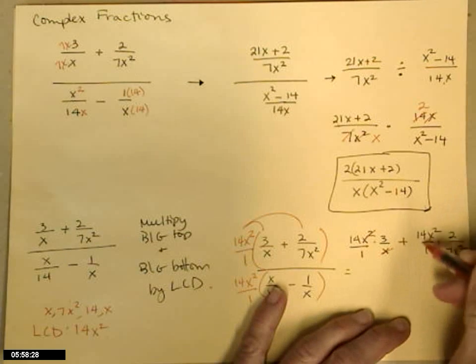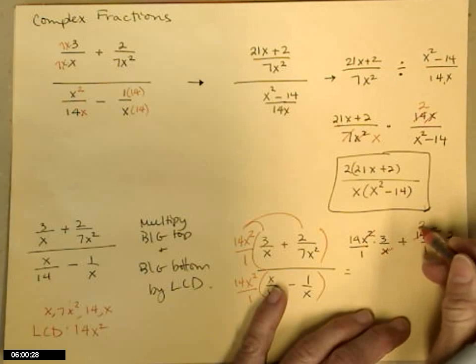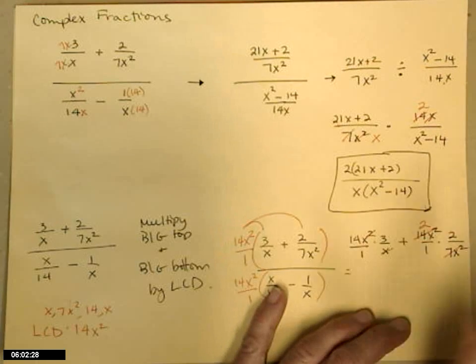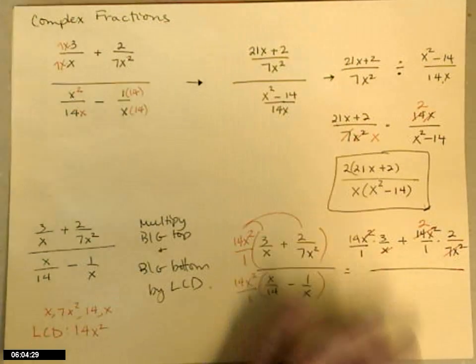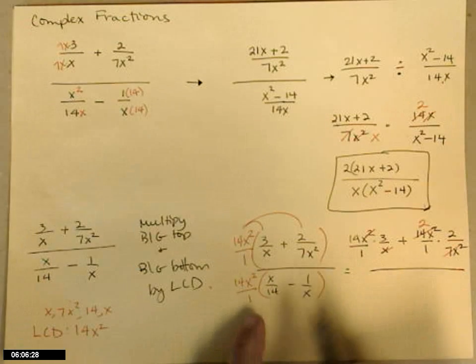Then we'll have plus 14x squared over 1 times 2 over 7x squared. Again, the 7x squared is going to cancel the 14x squared, leave behind a 2. Same thing on the bottom. I'm not going to write it distributed here. I hope you'll go with me.